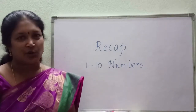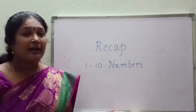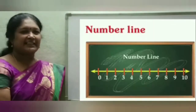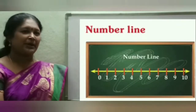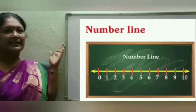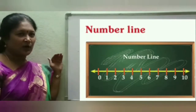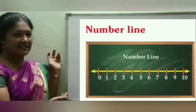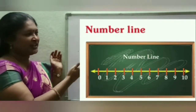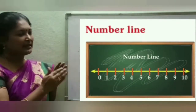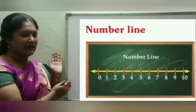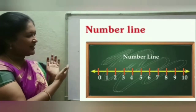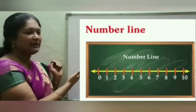Today we are going to learn about number line. Now we are going to learn more about number line. So this is a number line — a horizontal line with some numbers arranged on it, from 0, 1, 2, 3, and so on. The numbers arranged on the number line with equal distance — that is called a number line.